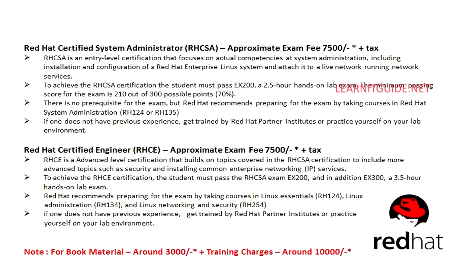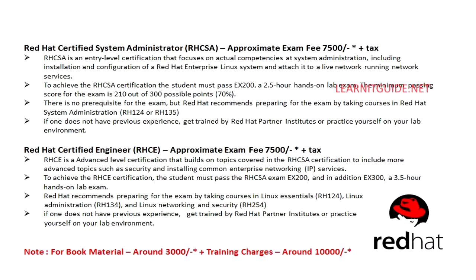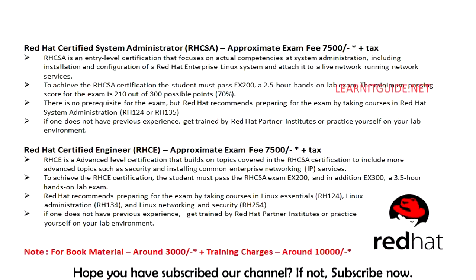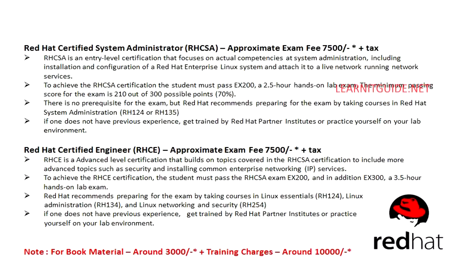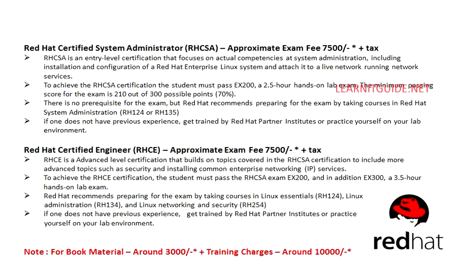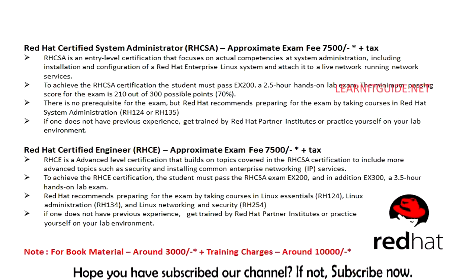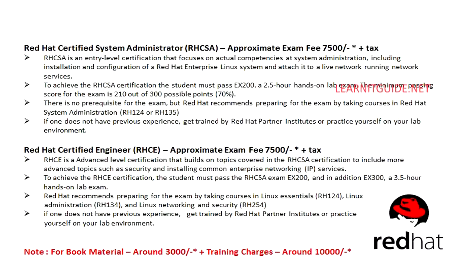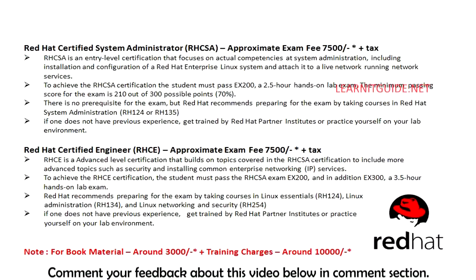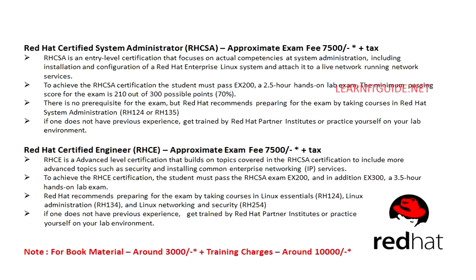RHCSA (Red Hat Certified System Administrator) is an entry-level certification that focuses on actual competencies in system administration, including installation and configuration of a Red Hat Linux OS and attaching it to a live running network. To achieve RHCSA, the student must pass exam code EX200 — a 2.5-hour hands-on lab exam. The minimum passing score is 210 out of 300 and there are no prerequisites. Red Hat recommends preparing by taking SA1 and SA2 courses, or getting trained by a Red Hat Partner Institute.